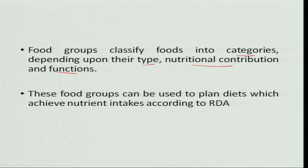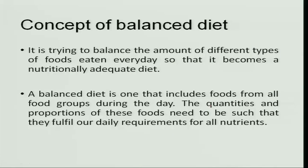These food groups can be used for planning diets in which we can achieve the nutrient intakes as per the RDA. A balanced diet tries to balance the amount of different types of foods eaten every day so that it becomes a nutritionally adequate diet. A balanced diet is one which includes foods from all the food groups during the day. It is not necessary that every meal should have foods from all the groups, but over the whole day it is better to include foods from all food groups.